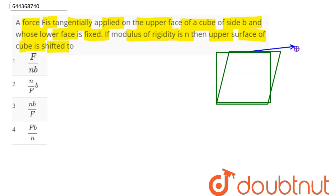the tangential force applied here is given to be F. Modulus of rigidity is eta. Hence, eta is equal to tangential stress, which equals tangential force divided by area, divided by shear strain that is phi.